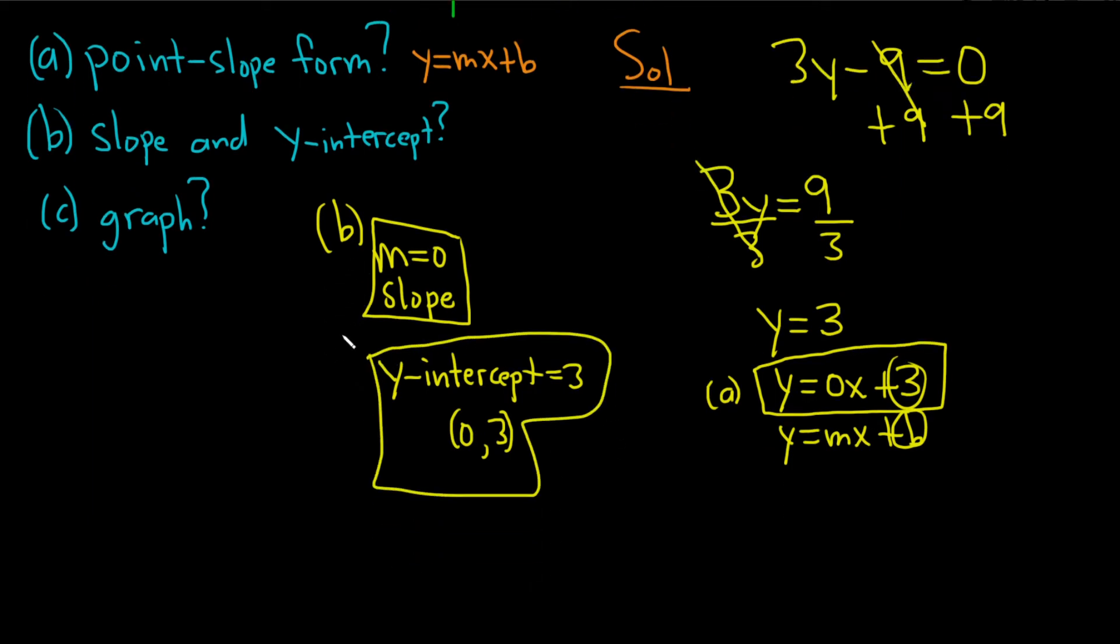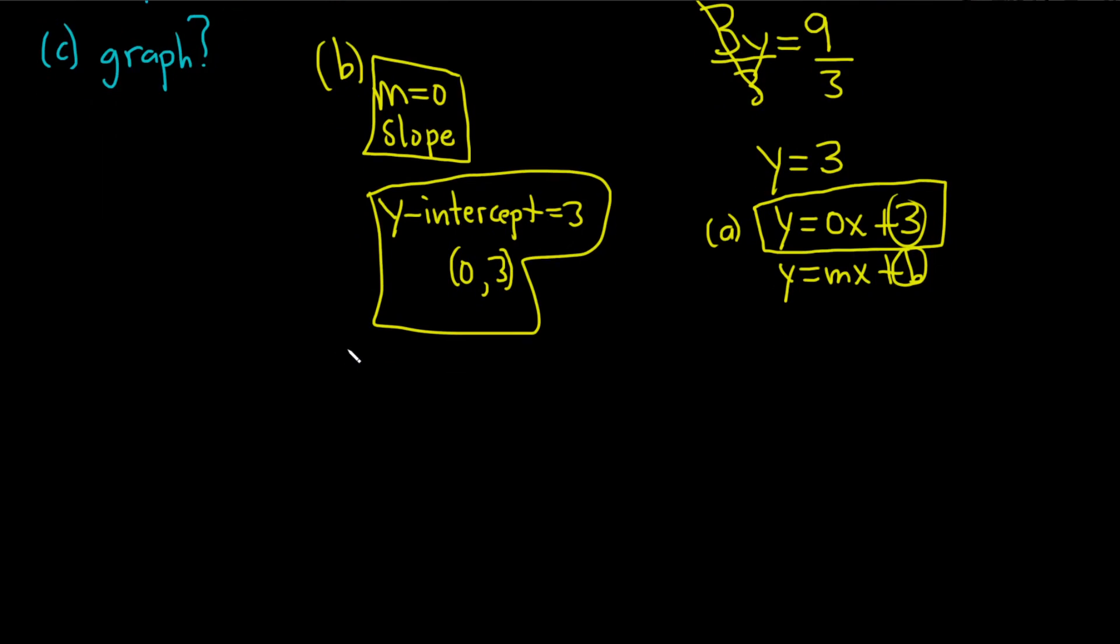And then part c wants us to do the graph, and the original question specifically tells us to use this information to do the graph. So let's try to do that, and then I'll explain other ways of doing it. So here's x, and here's y.